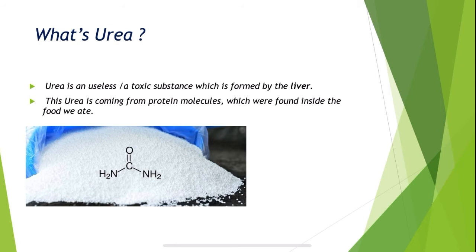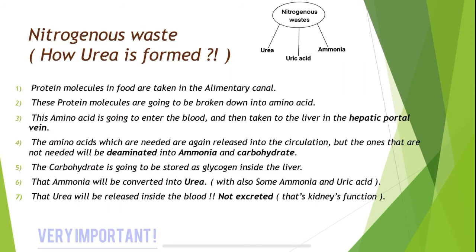Now the main points: what is urea? Urea is a useless, or in other words, a toxic substance which is formed by the liver and excreted by the kidney — we will be talking about kidney and urea formation in our next video. This urea comes from the protein molecules found inside the food we ate, as you can see in the picture.